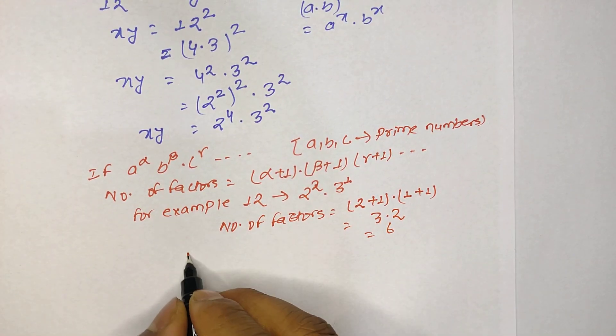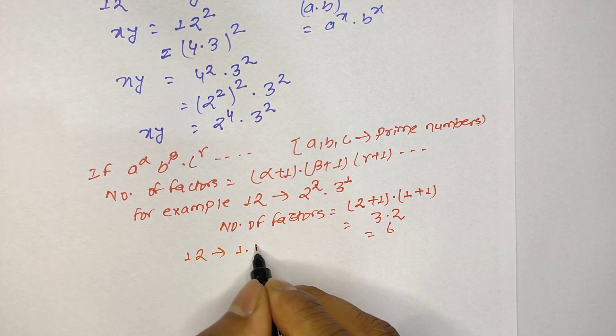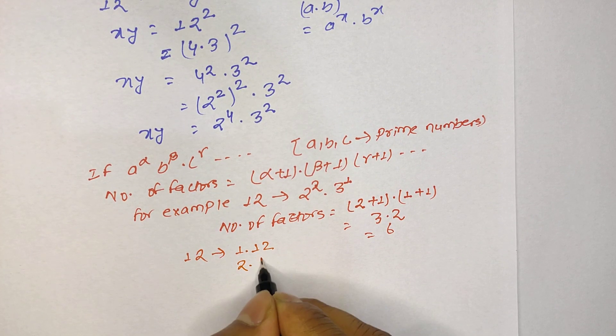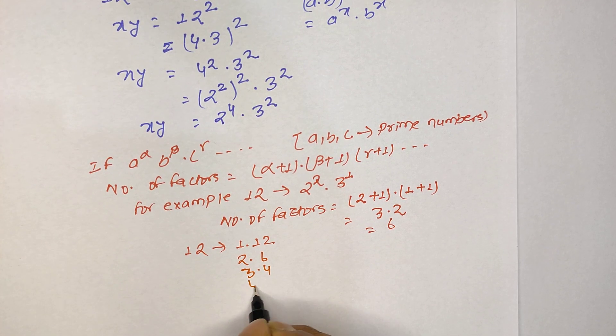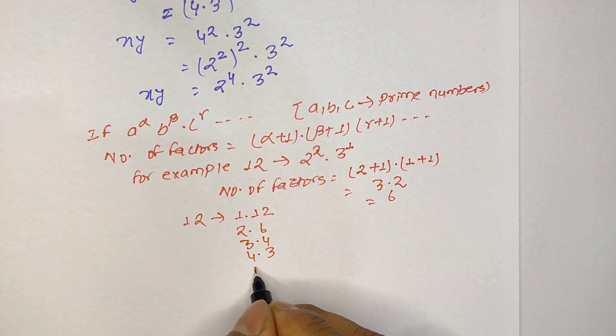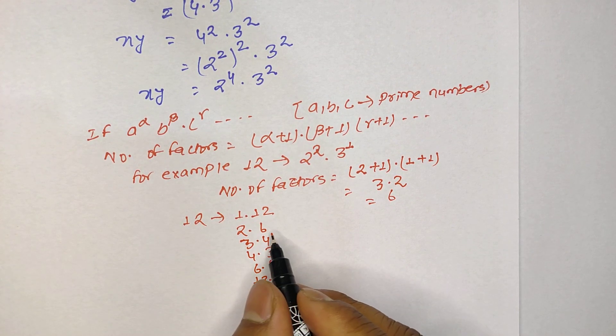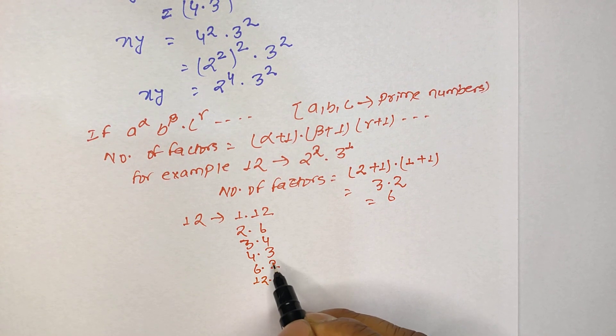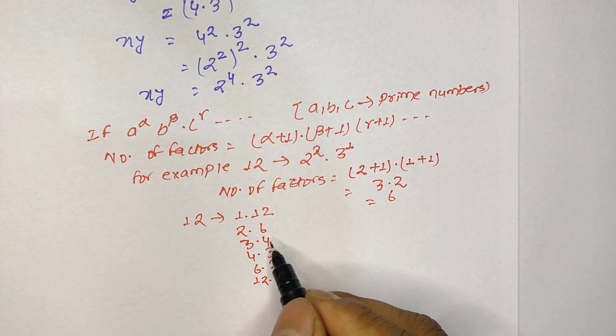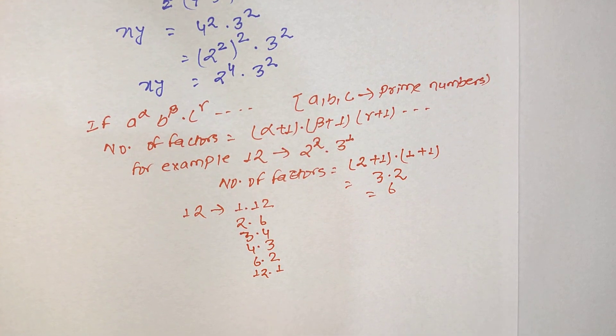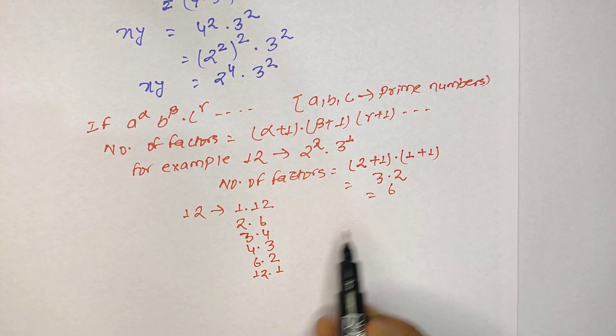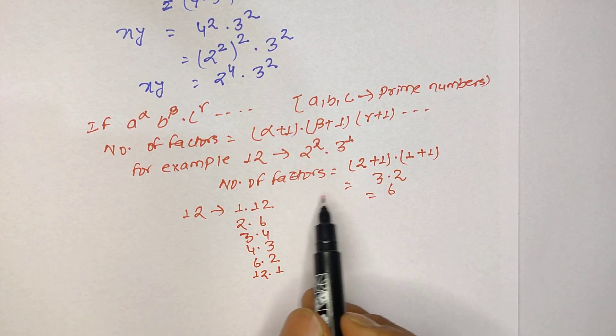And as you know that 12 can be written as 1 times 12, 2 times 6, 3 times 4, 4 times 3, 6 times 2, and 12 times 1. So if you count these factors: 1, 2, 3, 4, 5, 6. We have matched our condition. So it means that 12 has 6 factors, so this concept is right.